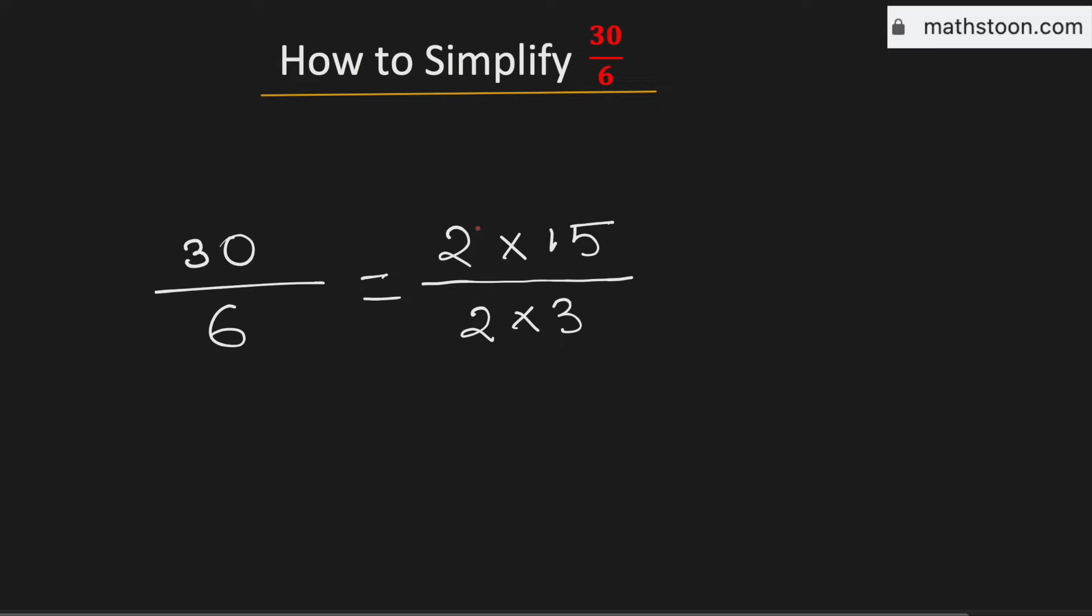As 2 is present in both the numerator and the denominator, we can cancel it out. And this is now equal to 15 over 3.